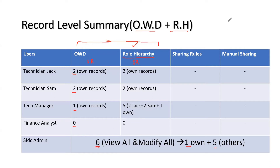From the previous diagram we know that the tech manager sits at the top with two tech engineers reporting to this manager — technician Sam and technician Jack. Tech Jack has two records, tech Sam has two records, and the manager owns one record from the OWD. Since the role hierarchy is enabled, now this manager can see five records: two records from Jack, two records from Sam, and one record that he owns. This is how role hierarchy is helping us extend the record visibility to the top management so that they can see what exactly the work is happening at the ground level.